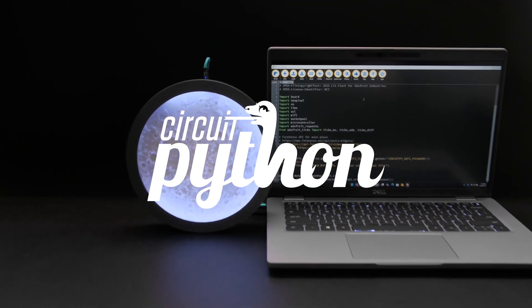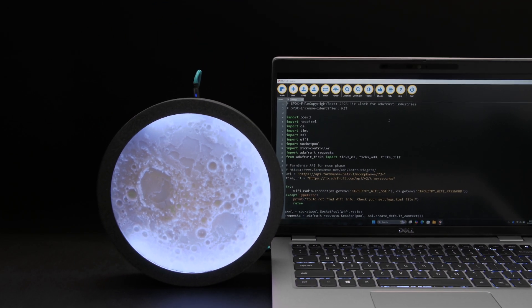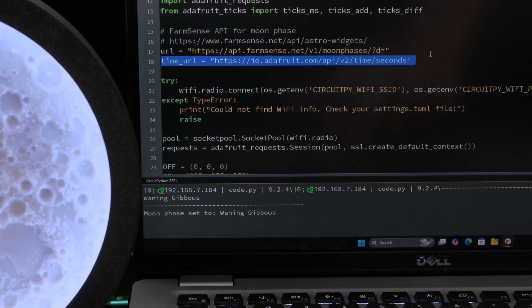The CircuitPython code gets information from the FarmSense API and uses the Adafruit I.O. Time API to fetch the Unix timestamp.